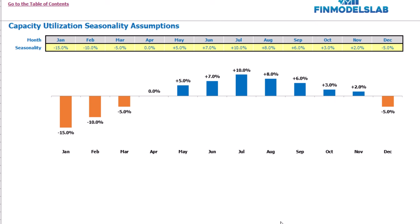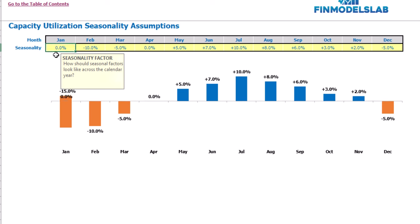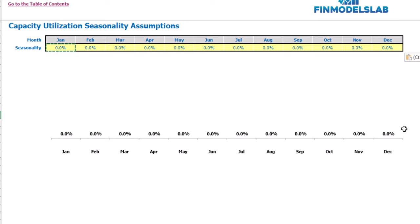On the seasonality tab you can set up your capacity utilization seasonality assumptions across the months. The dashboard previously set up the average capacity utilization by years, and here you may adjust it for different months across the year. For example, minus 10% means that if you have 50% average capacity utilization, you will multiply 50% by 0.9 and get 45% for February. Conversely, plus 10% in July means 50% multiplied by 1.1 equals 55%. If you don't need any seasonality, you can put 0 across all months and it will be flat.